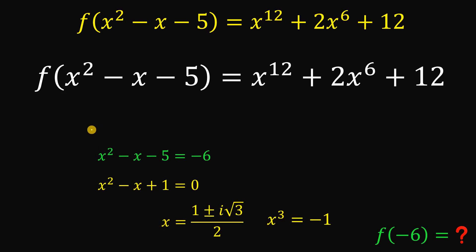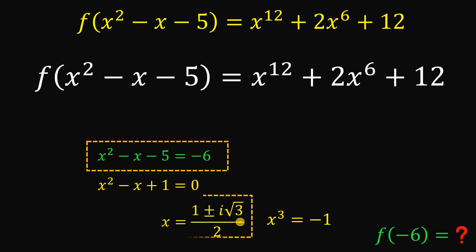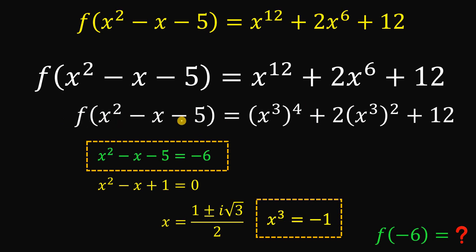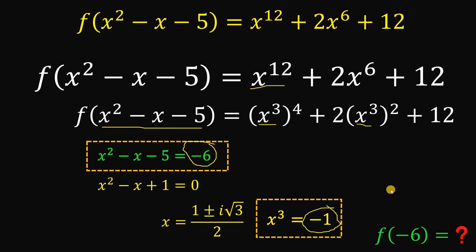Instead of using x = (1 ± i√3)/2 directly, we use x³ = -1. We rewrite the function: x¹² becomes (x³)⁴ and 2x⁶ becomes 2(x³)². So f(x² - x - 5) = (x³)⁴ + 2(x³)² + 12. Replacing x² - x - 5 with negative 6 and replacing x³ with negative 1, f(-6) equals (-1)⁴ + 2(-1)² + 12.